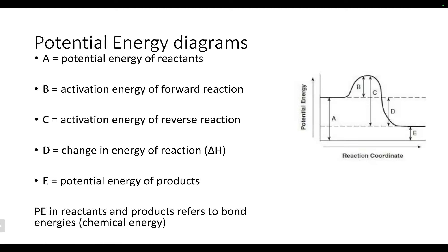Looking at another example for a better understanding: on the left, letter A shows us the potential energy of the reactants. Remember from chapter six, the potential energy is related to the energy stored in chemical bonds. The reason we see this change as we move throughout the diagram is because during the reaction, we're breaking and forming new bonds, so the potential energy changes during that process. On the opposite side, E shows us the potential energy of the products. In this case we'd be looking at an exothermic reaction because the products are finishing at a lower spot — so the system is losing energy overall.